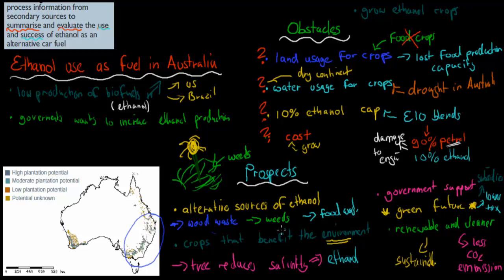Some of the prospects were that we could find an alternative source of ethanol, such as wood waste, weeds, and food waste. We could plant crops that benefit the environment, such as a tree I mentioned earlier. We have government support at the moment, which means more funding for the industry. And it's a renewable and cleaner source, so it's more sustainable and has less CO2 emissions.